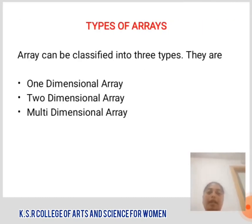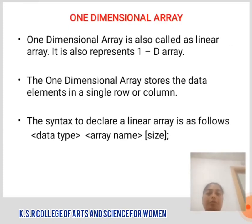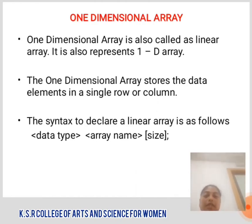Types of Array: Arrays can be classified into three types — 1-Dimensional Array, 2-Dimensional Array, and 3-Dimensional Array. A 1-Dimensional Array is also called a Linear Array, represented as a 1D Array. It stores data elements in a single row or column. The syntax to declare a Linear Array is: data_type array_name[size].